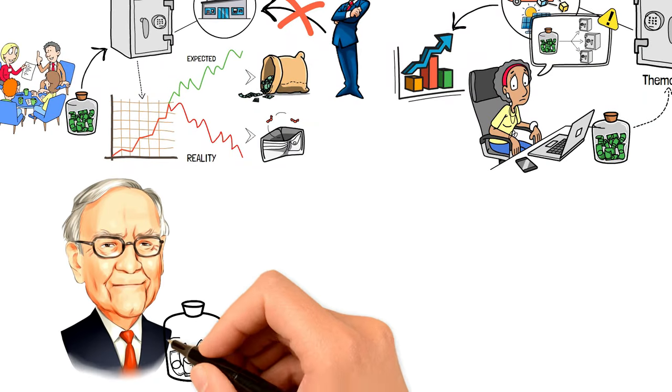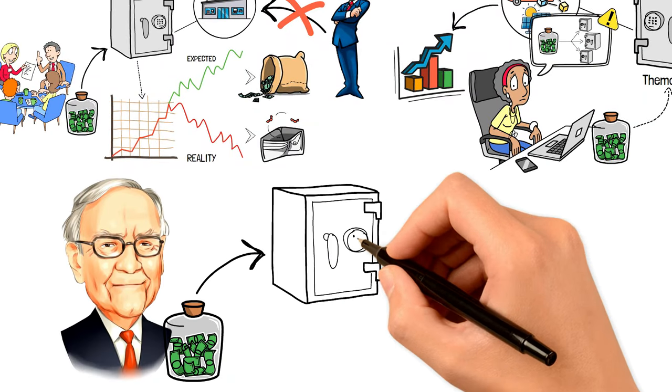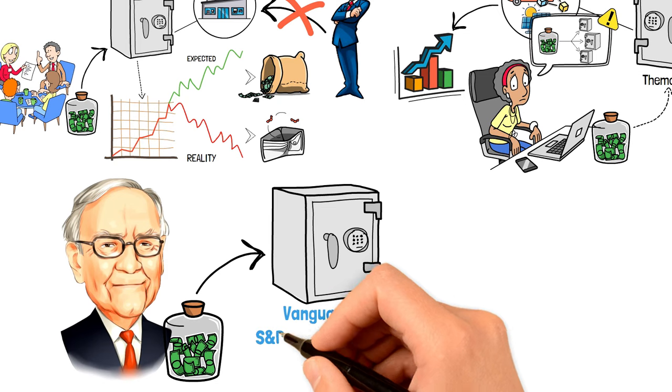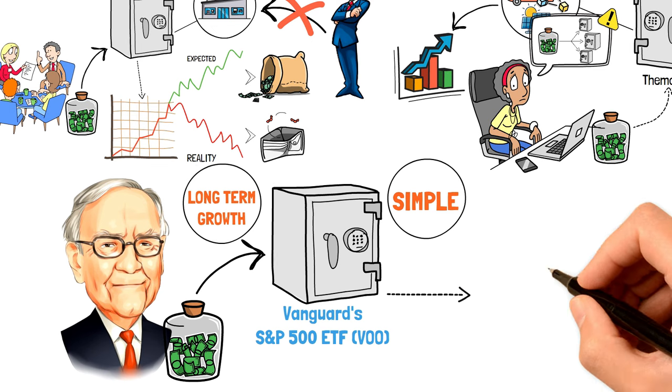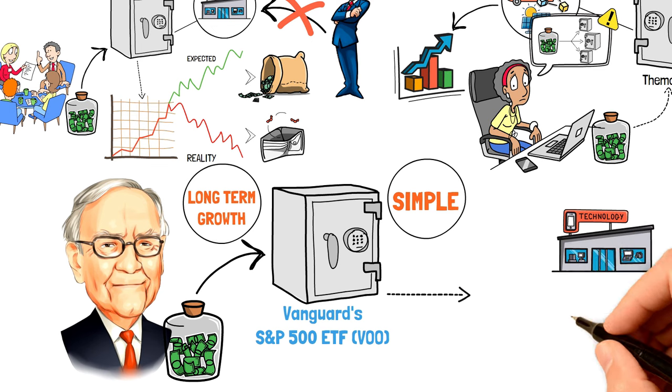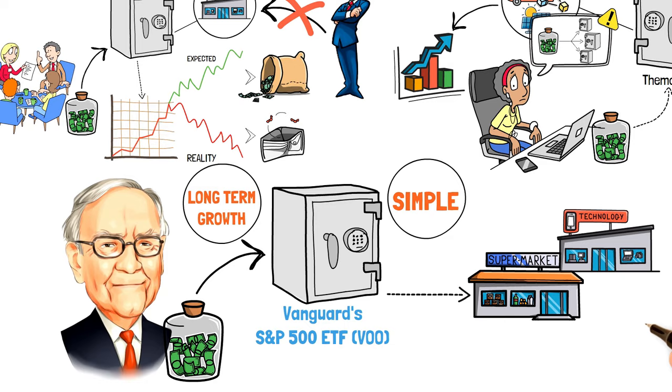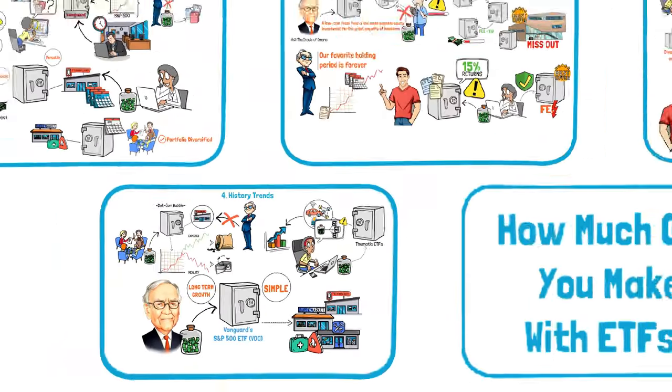Buffett's own investment in the S&P 500 through Vanguard's S&P 500 ETF, or VOO, serves as proof of his belief in the power of simplicity and the long-term growth potential of the broad market. This ETF gives you access to the best companies in a wide range of industries, following Buffett's advice to bet on the future of the American economy.